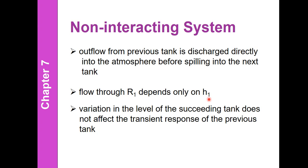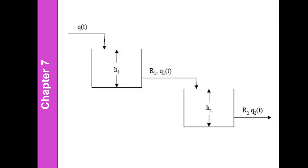R1 is the linear resistance through which the outflow from the first tank flows, and it depends on the level of that particular tank. Variation in the level of the succeeding tank does not affect whatsoever the transient response of the previous tank — meaning whatever degree of variation occurs in the next tank's level is not dependent on the transient response of the previous tank.